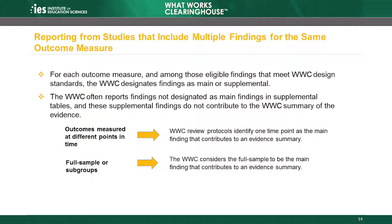If the study does not report a full sample finding but two or more subgroup findings meet WWC design standards, the WWC will aggregate the findings into a single finding for the outcome measure using a weighted average. The formula for the weighted average is provided in the Procedures Handbook.